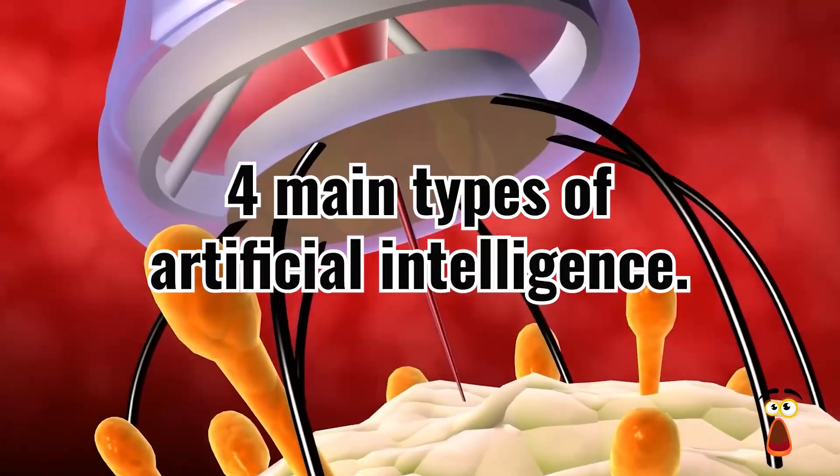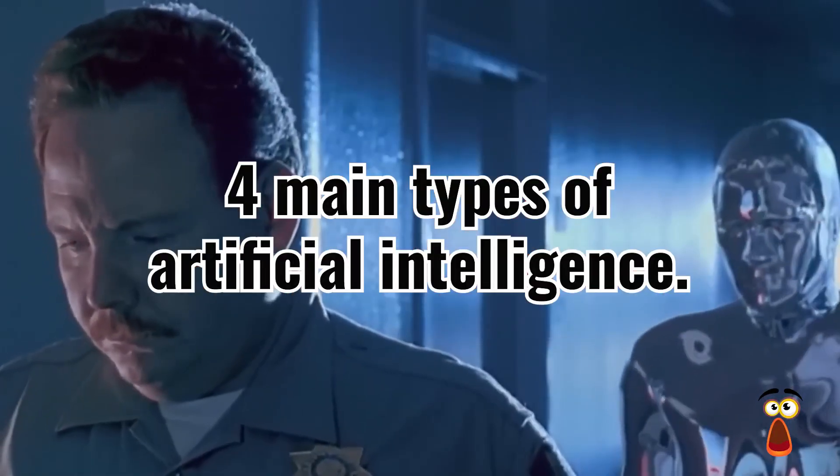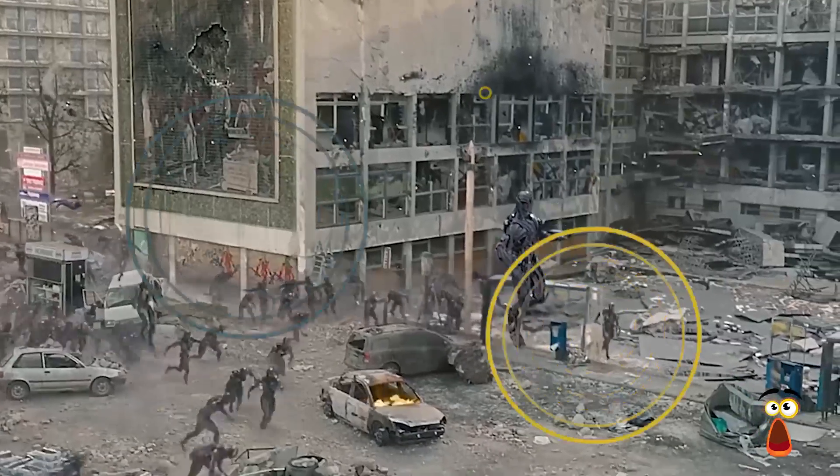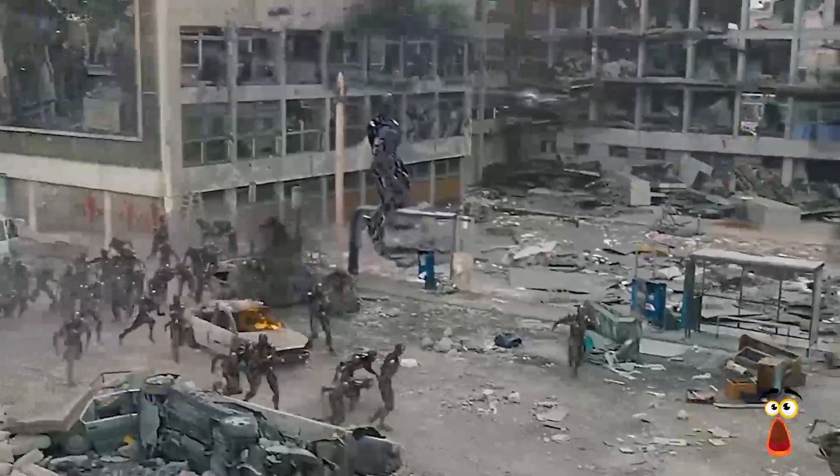There are four main types of artificial intelligence. The types are as follows: reactive machines, limited memory, theory of mind, and self-awareness.